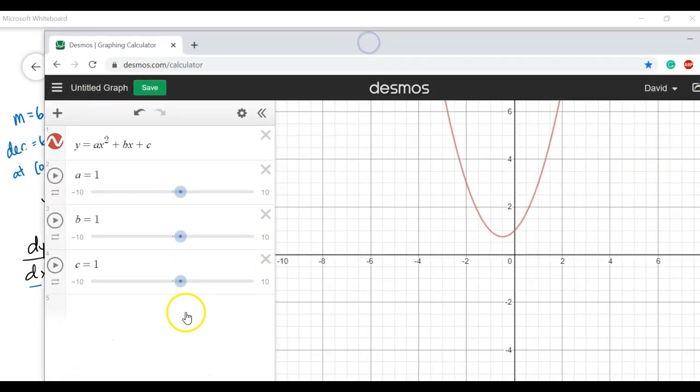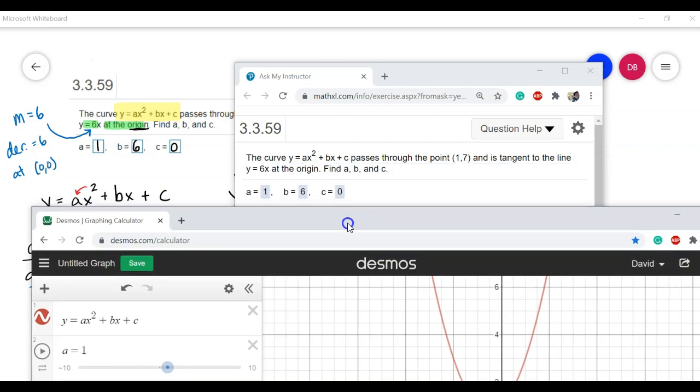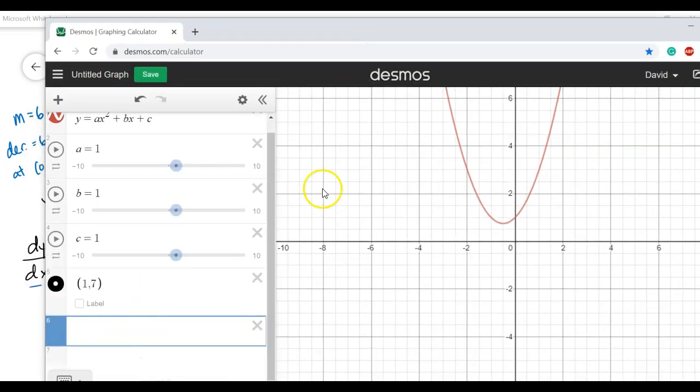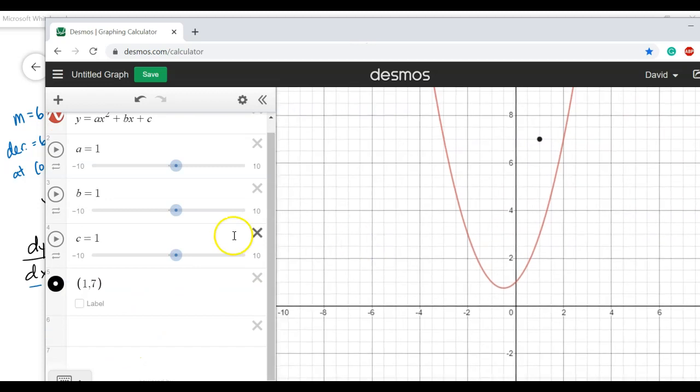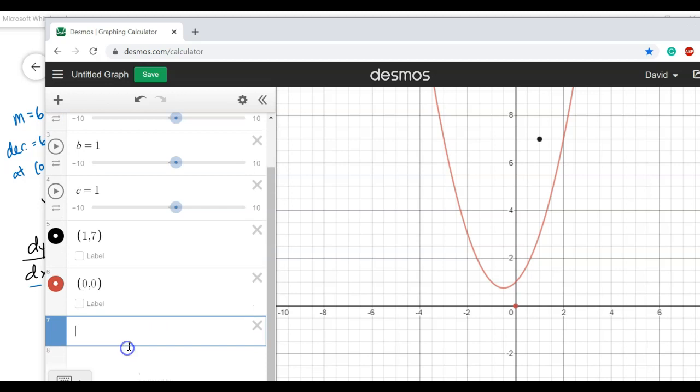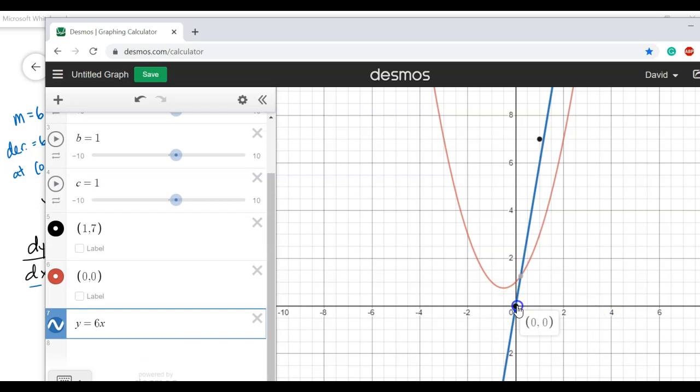Look at the information they gave us in the problem. It passes through the point (1, 7). So let's make 1, 7 on this graph. And then at the origin, the tangent line is y equals 6x. So they're telling us that (0, 0) is on the graph. And our tangent line needs to be y equals 6x there. And I can see that it touches at 0, 0. So obviously, this line is going through there. And I also need to hit that point.